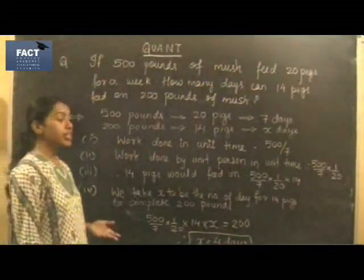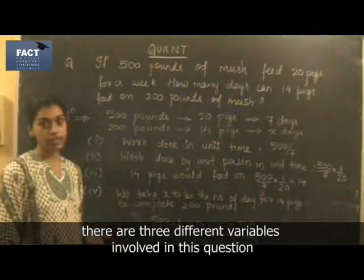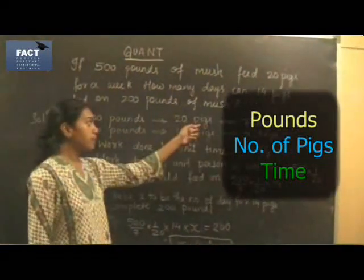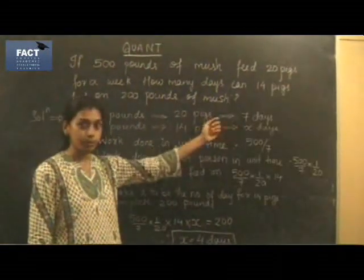Now you'll see that there are three different kinds of variables involved in this question: pounds, number of pigs, and the time, that is the number of days.